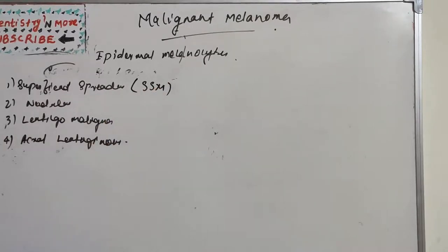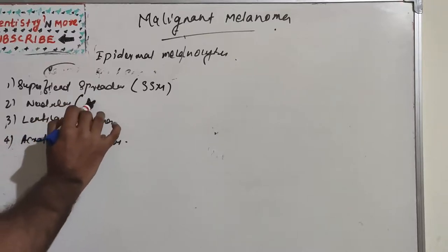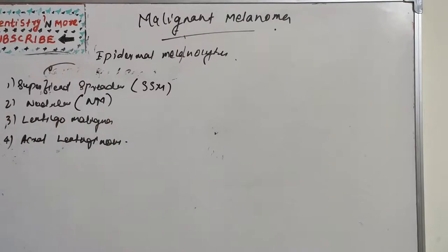Superficial spreading melanoma exists in a radial growth phase called pre-malignant melanoma. It presents as a tan, brown, or black lesion with admixture of colors on sun-exposed skin, especially the back. The vertical growth phase is characterized by an increase in size, change in color, nodularity, and ulceration.